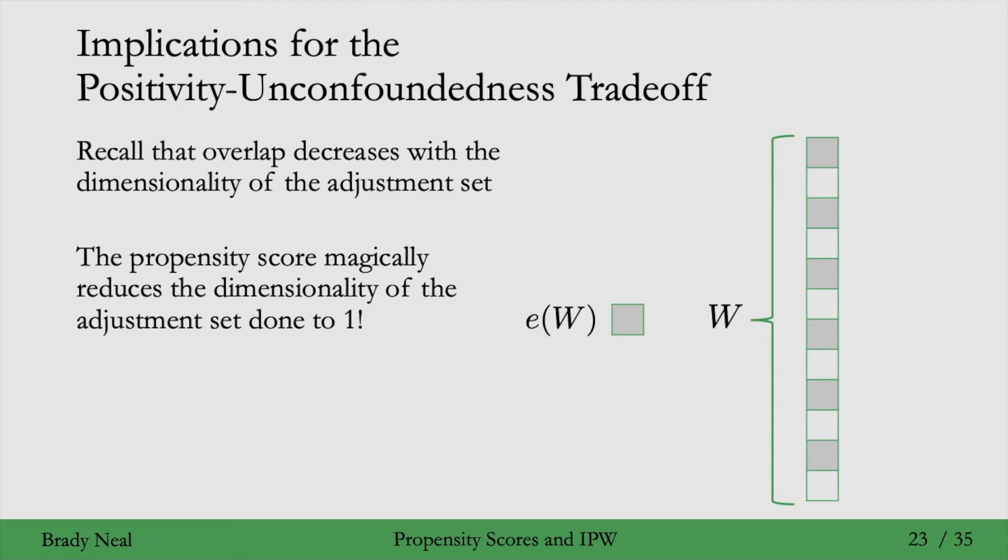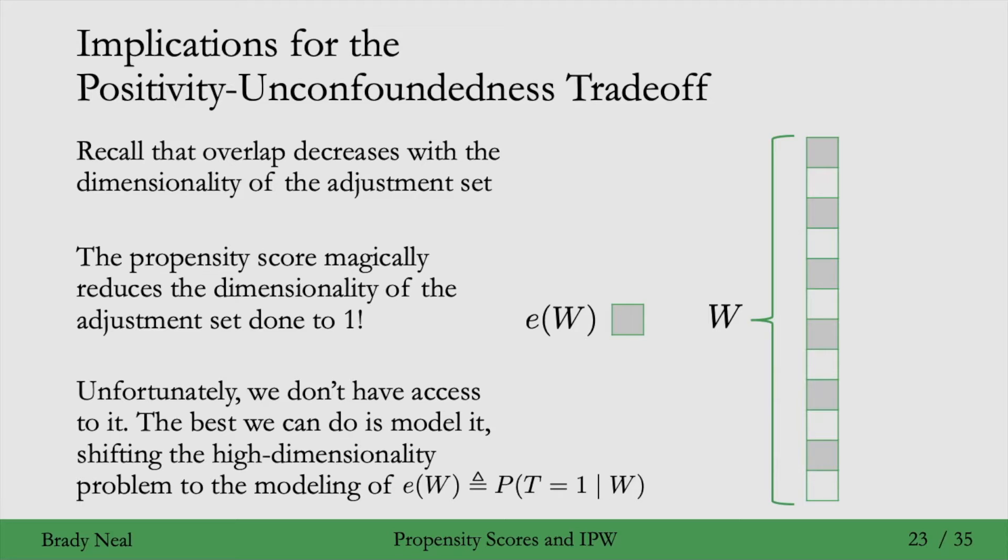So problem solved, right? Unfortunately, not really, because we don't have access to the propensity score. The best we can do is model the propensity score using some model, say, in scikit-learn. For example, logistic regression is really popular. When we model the propensity score, we're just shifting the high-dimensionality problem to the modeling of the propensity score. Unfortunately, we haven't really solved this positivity-unconfoundedness trade-off.